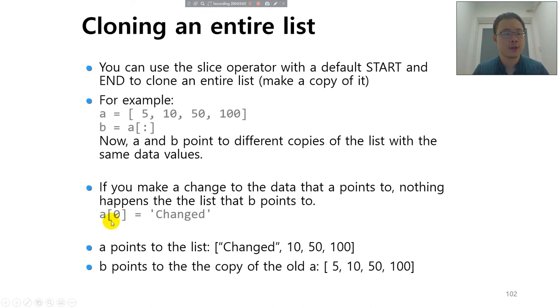Therefore, when you change the first element of A to 'changed', B points to the copy of the old A. Because whenever you use slicing, you're actually creating a new list. The list has identical values as the previous list, but it's a new list. And the new list is being assigned to B, so B will not change whenever you change A.